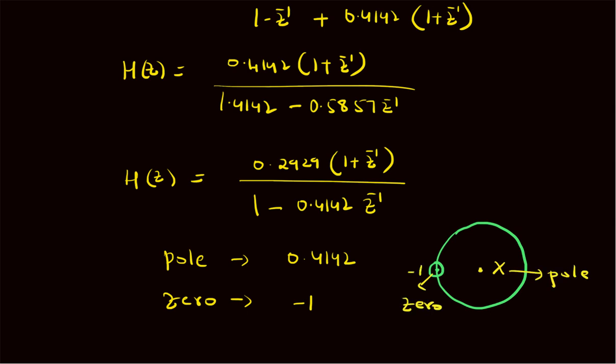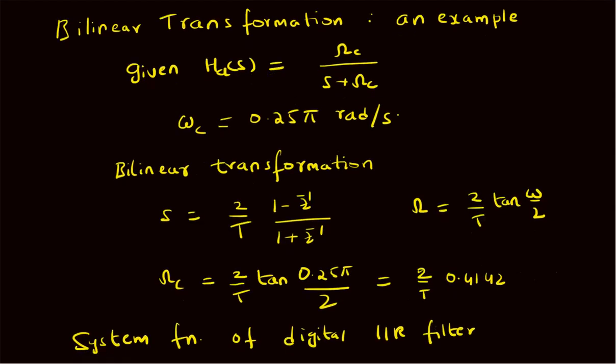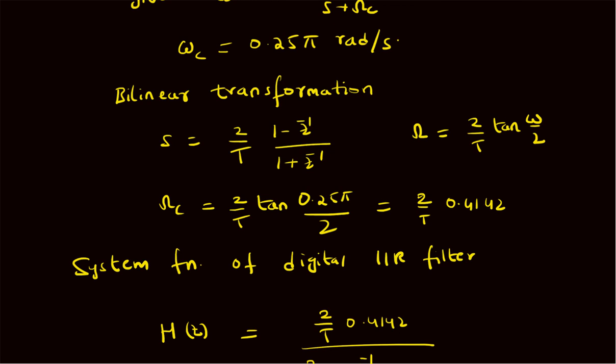To summarize, we have looked at an example illustrating the application of the bilinear transformation for converting an analog filter to a digital IIR filter. Given H_a(s) = ωc/(s + ωc) with the digital filter's cutoff frequency being 0.25π radians per second, we apply the bilinear transformation: s = (2/T)(1 − z⁻¹)/(1 + z⁻¹), and the frequency relation Ω = (2/T) × tan(ω/2), where Ω is analog frequency and ω is digital frequency. The analog cutoff becomes (2/T) × tan(π/8).